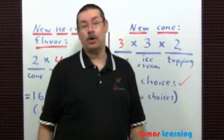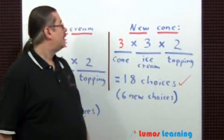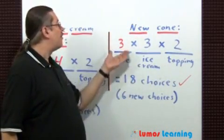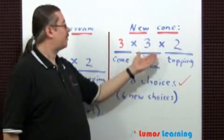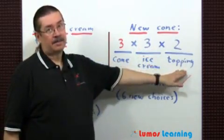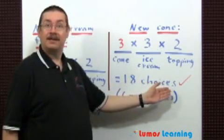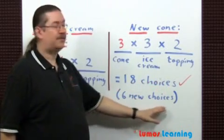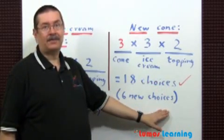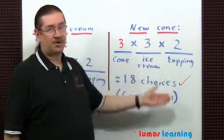Let's see what happens if the shop owner decides to add a new cone instead. The slots will be as follows: three for cone, three for ice cream, and two toppings. Multiply the numbers together, you get 18 choices, so that means there are six new choices available. Therefore, the shop owner should add a new cone.